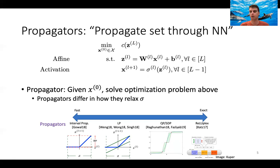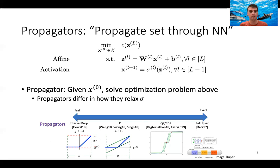Why care about speed? Two reasons. First, you may want to do this analysis online because you don't know what measurements your system will receive. Second, these analysis tools — originally designed for analyzing an already-designed policy — are later used in the control design process itself. If you run these tools during neural network training, they need to be as fast as possible; otherwise your training will never converge.